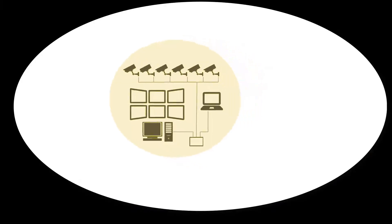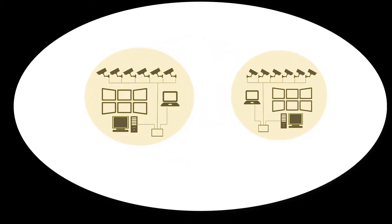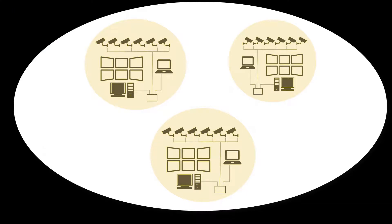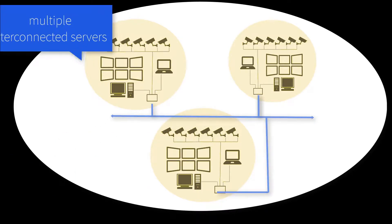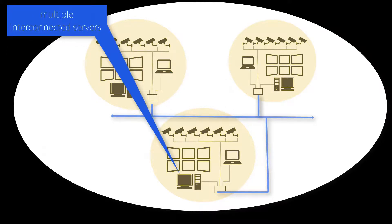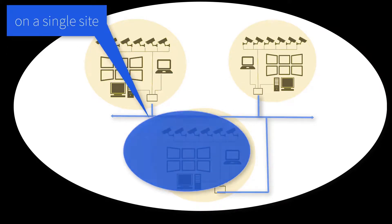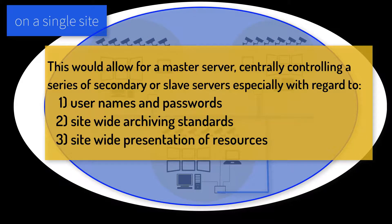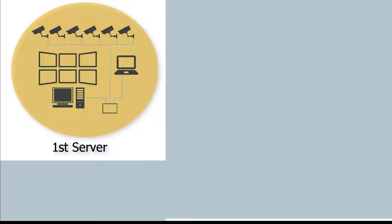A site can have various separate Cathexis Vision servers that operate independently of each other, or that can be interconnected as a centrally controlled system in a master-slave configuration where archiving and user credentials are common across the system and the entire site's resources are presented on every server.